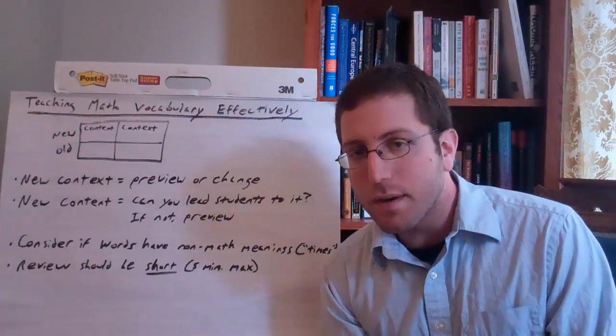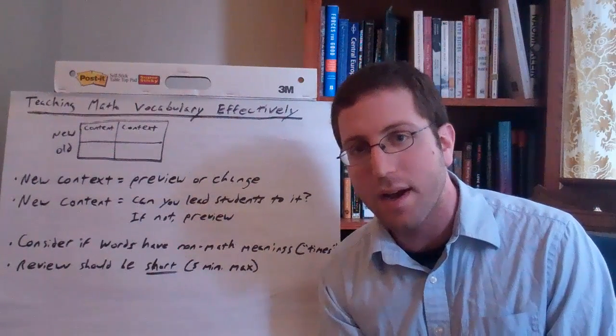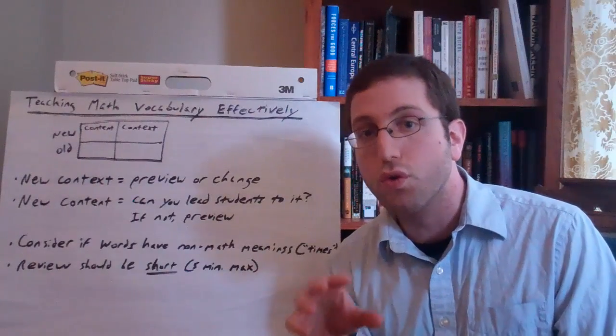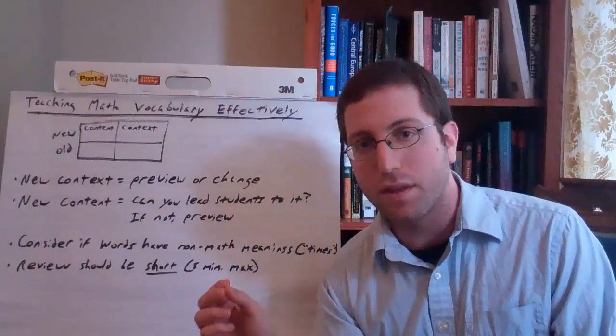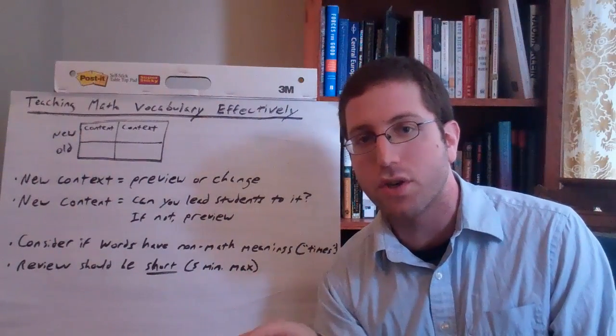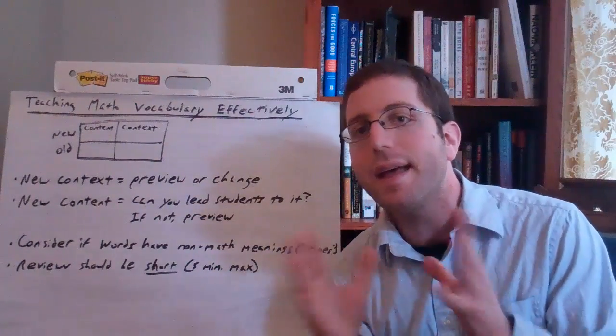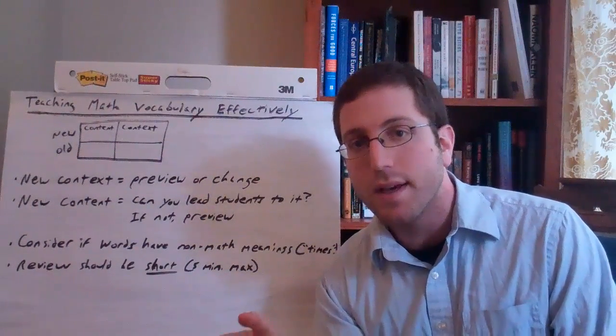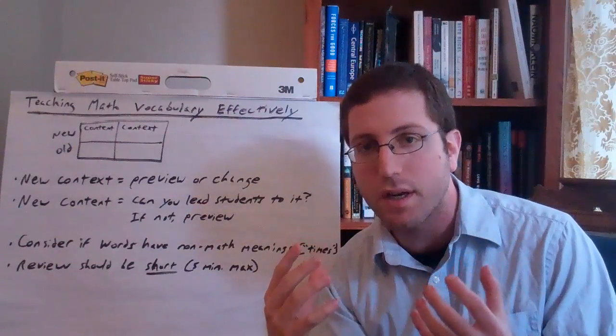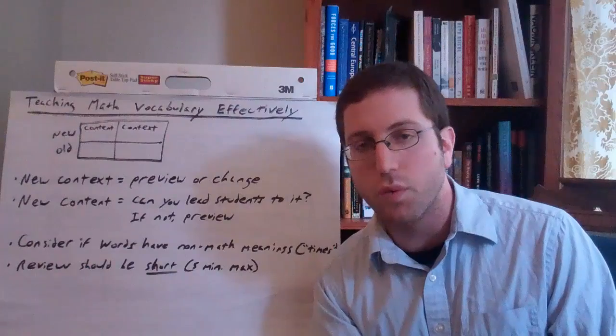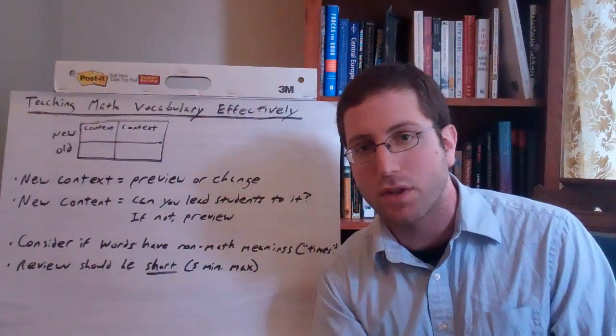What that means is, for example, with a concept like multiplication, you don't actually need to use the word multiply to begin with there. You can say things like, okay, so if we have two groups of three instead of two times three or two multiplied by three, you don't actually have to use multiplication terms to explain that. And you can actually lead your students to understand what multiplication is and then say, now what we call this is multiplication. And the reason that that's better is because students have the concept to really tether the vocabulary word to, which research has shown really enhances comprehension and retention of those academic terms.